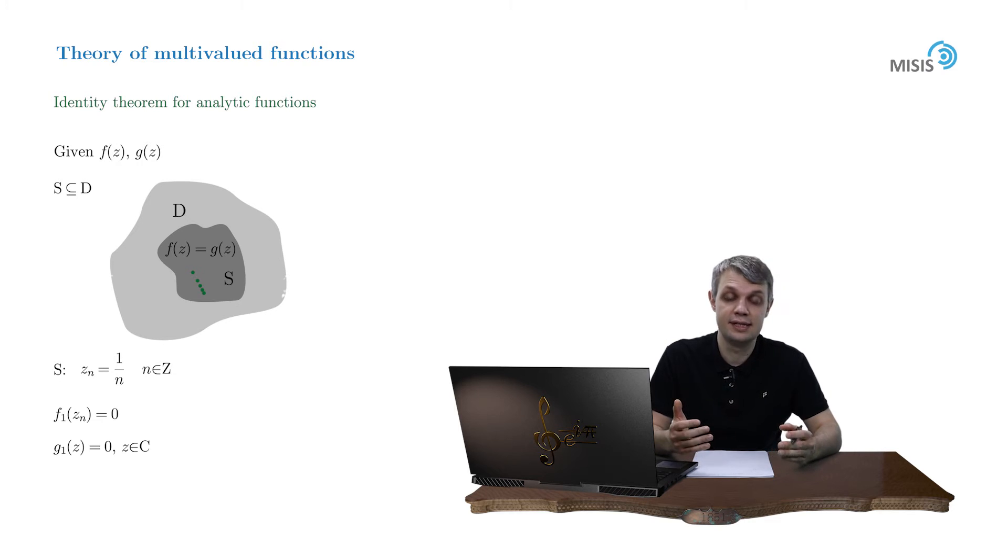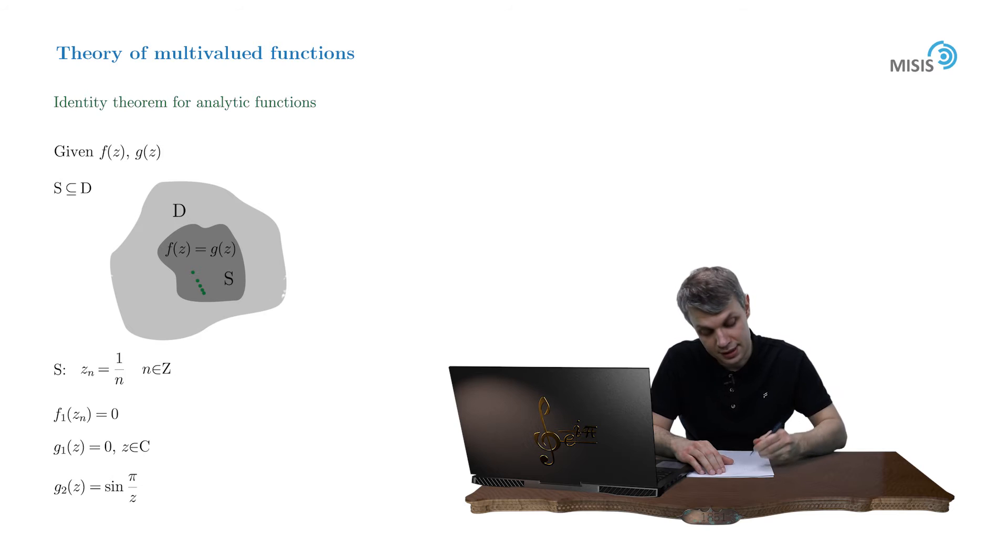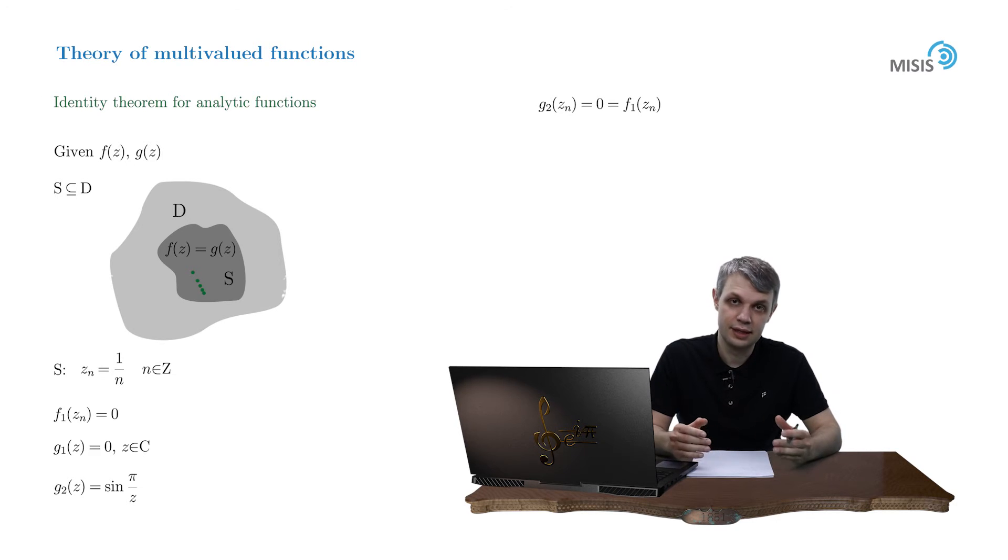But what about an attempt to try something less trivial? Let's consider the function g₂ of z equals sin of π by z. Then as you see, g₂ of z_n also vanishes for points z_n equals 1 over n. And now it seems that we built two analytic continuations of a single function. So something went wrong. Let's try to understand what exactly.